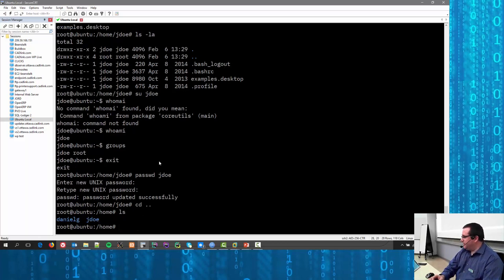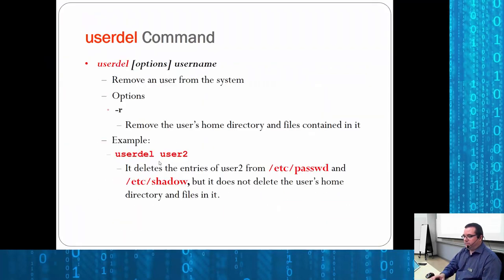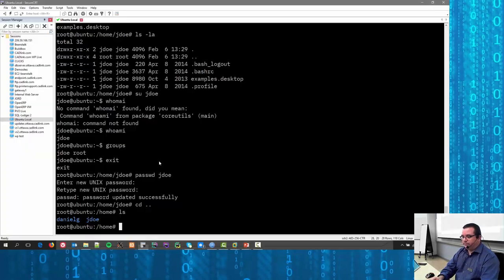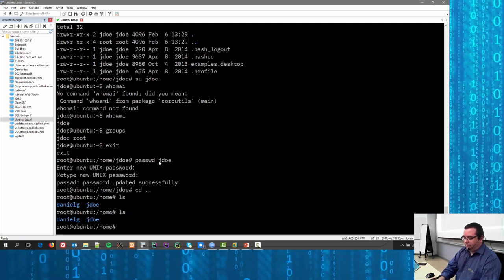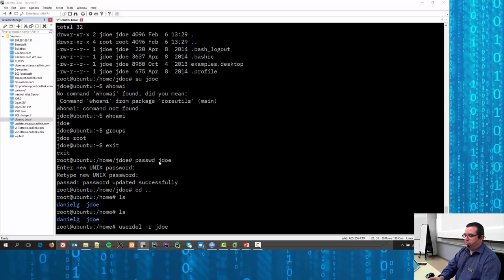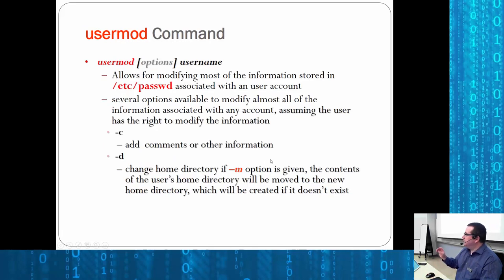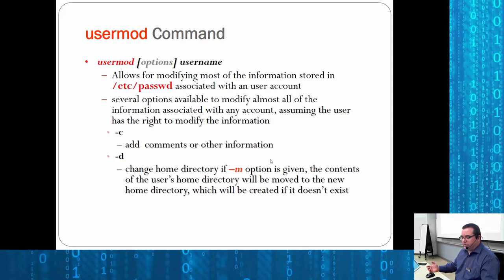The next command is userdel — it deletes a user. It has far fewer options. userdel -r removes the home directory as well. If you don't include -r, it removes their ability to log in but leaves all their files behind. If you've ever worked somewhere where you terminate a person, you nuke their account but not their data — because you may need it later, for legal reasons, or because police want it.